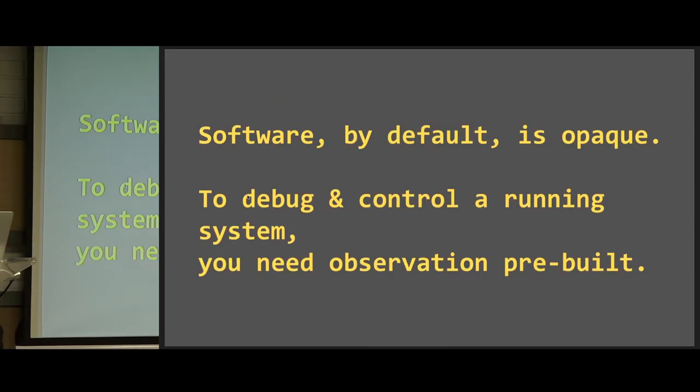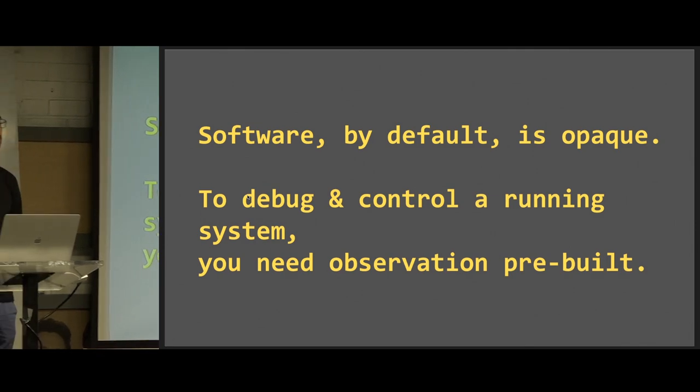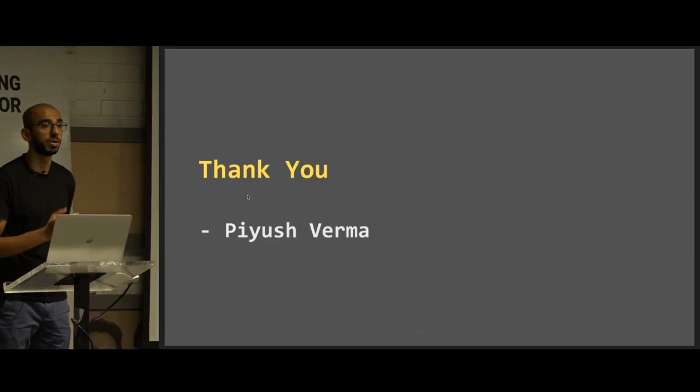Last converging thought, software by default is opaque. To debug and control a running system, you need observability and observation built-in. Thank you. I'm Piyush Verma.